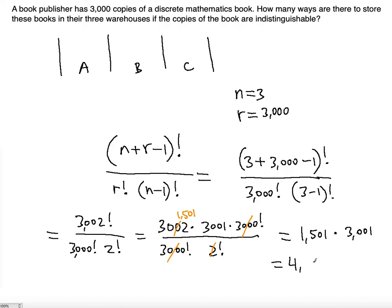If you use your calculator you will get 4,504,501 ways. So indeed there are so many ways, approximately four and a half million ways, because we're talking about 3,000 books, 3,000 identical copies that you're going to distribute among the three warehouses.